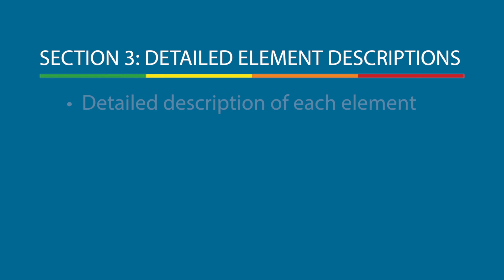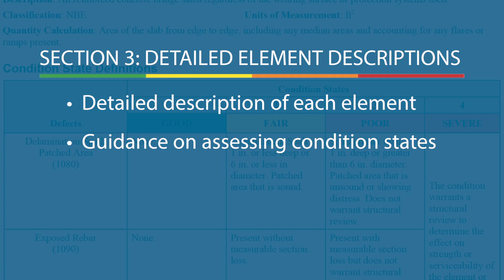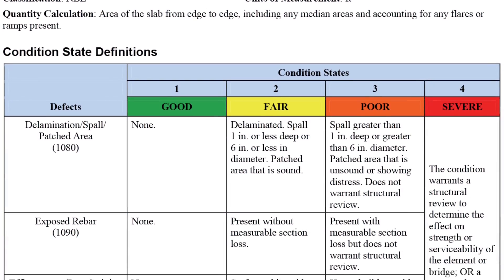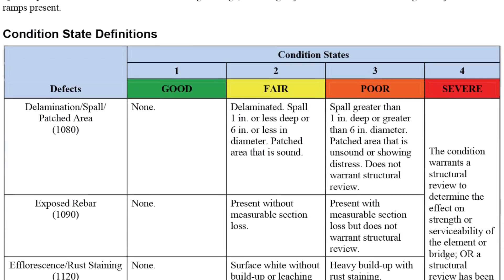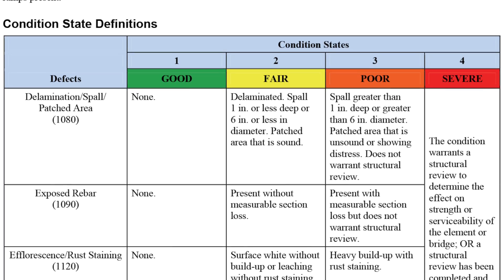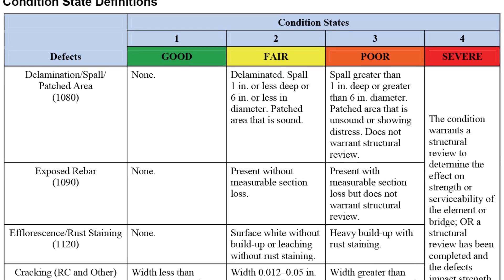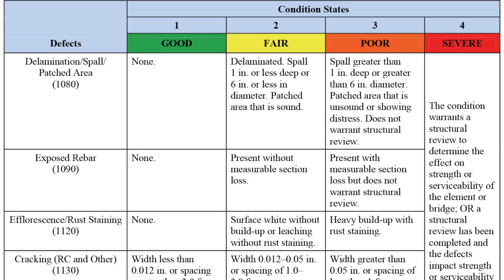Section 3 gives detailed descriptions of each element and provides guidance on assessing condition state for that element. Both the element location matrix and the detailed element descriptions are presented in tables for easy reference, and the condition states are color-coded.